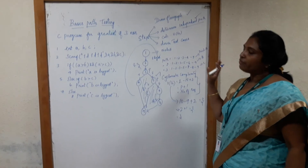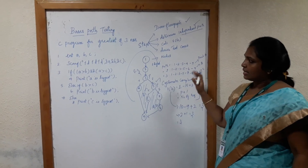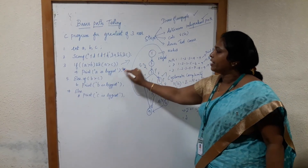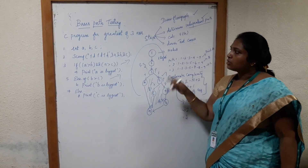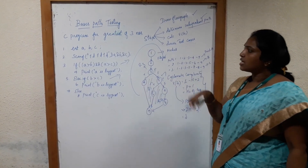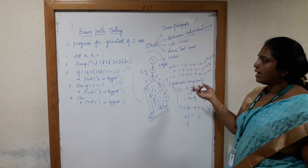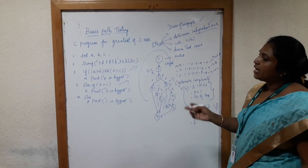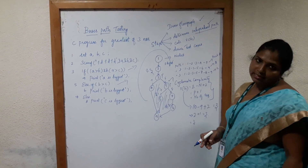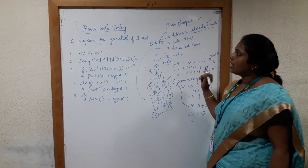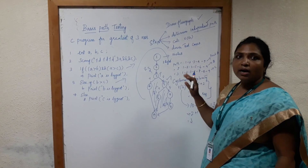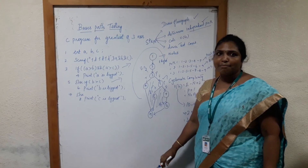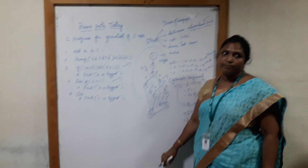The last step is to derive the test cases. Here you have two test cases corresponding to the two predicate nodes: the first test case is A should be greater than B and C, and the next test case is B is greater than C. I hope you understood. In the next video we will see about some other testing methods. Thank you.